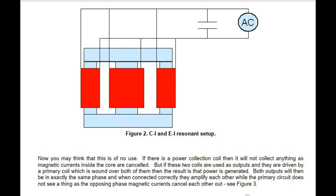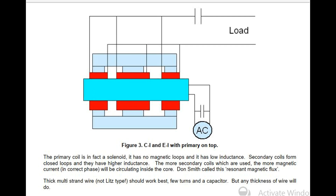If there is a power collection coil it will not collect anything as magnetic currents inside the core are cancelled. But if these two coils are used as outputs driven by a primary coil wound over both of them, then power is generated. Both outputs will be in exactly the same phase; when connected correctly they amplify each other while the primary circuit does not see a thing, as the opposing-phase magnetic currents cancel each other out — see Figure 3: CI/EI with primary on top. The primary coil is in fact a solenoid with no magnetic loops and low inductance. Secondary coils form closed loops with higher inductance. The more secondary coils used, the more magnetic current in correct phase will circulate inside the core. Don Smith called this resonant magnetic flux.